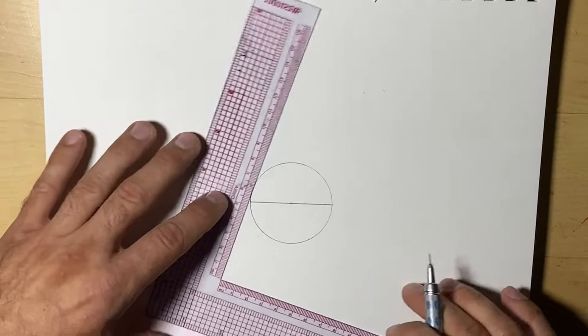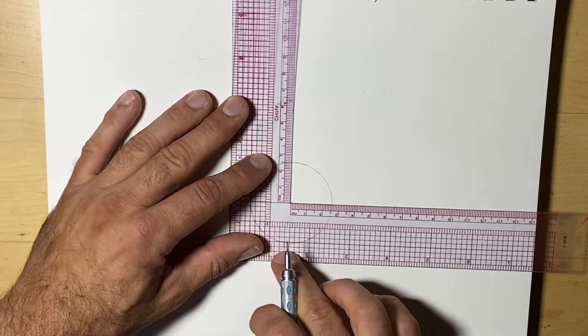So if we wanted to cheat, we could use our T ruler to make the perpendicular line or the right angle. We want to cut that in half now.